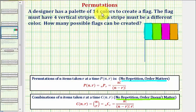So again, because we have 14 colors, and we're selecting four colors at a time, the total number of flags would be equal to 14 permute four.